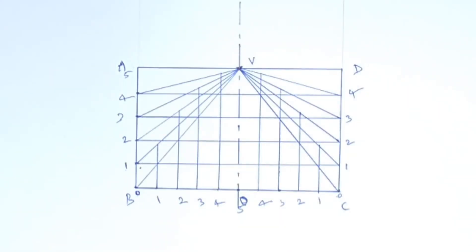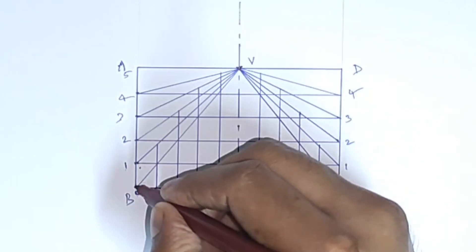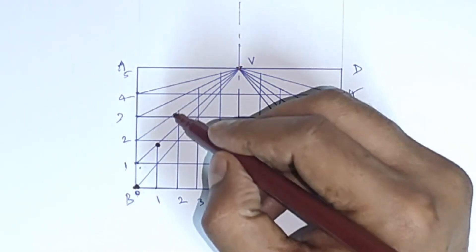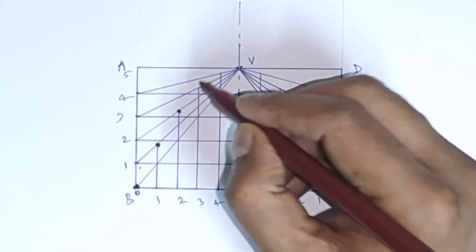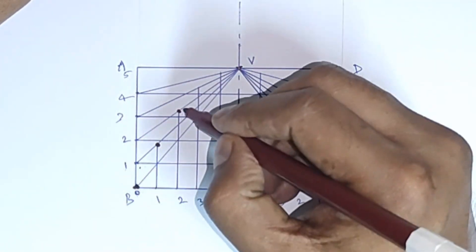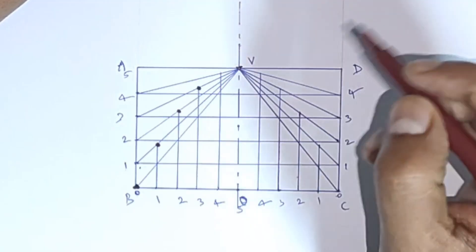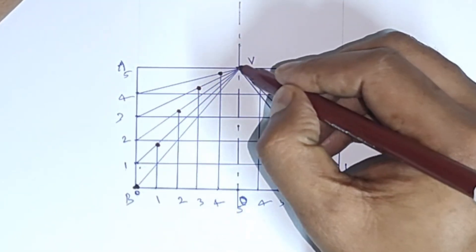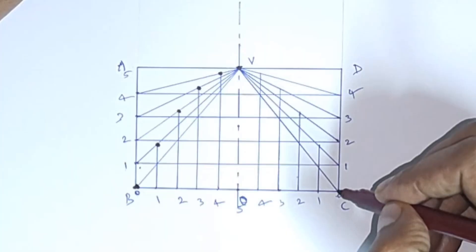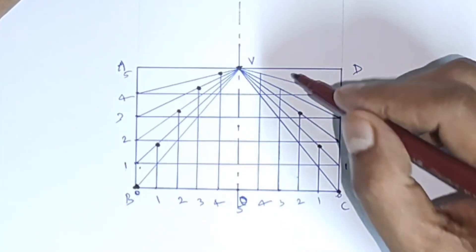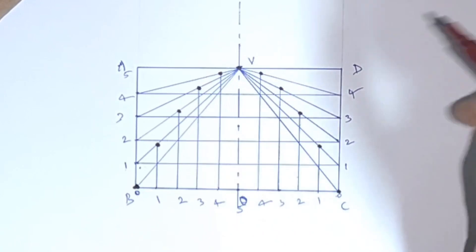This is our first point, 2nd point, 3rd. Sorry, P0, P1, P2, P3, P4, P5. Similarly, P0, P1, P2, P3, P4.